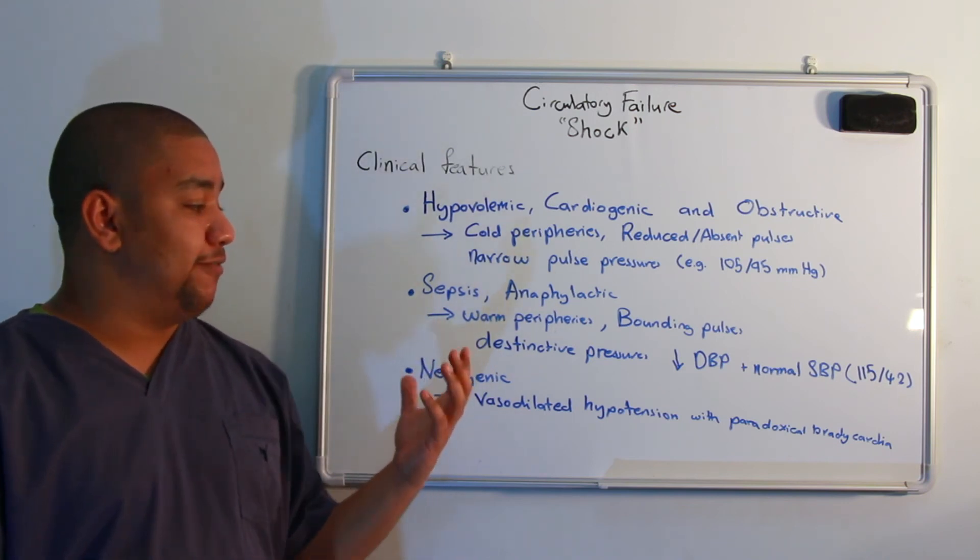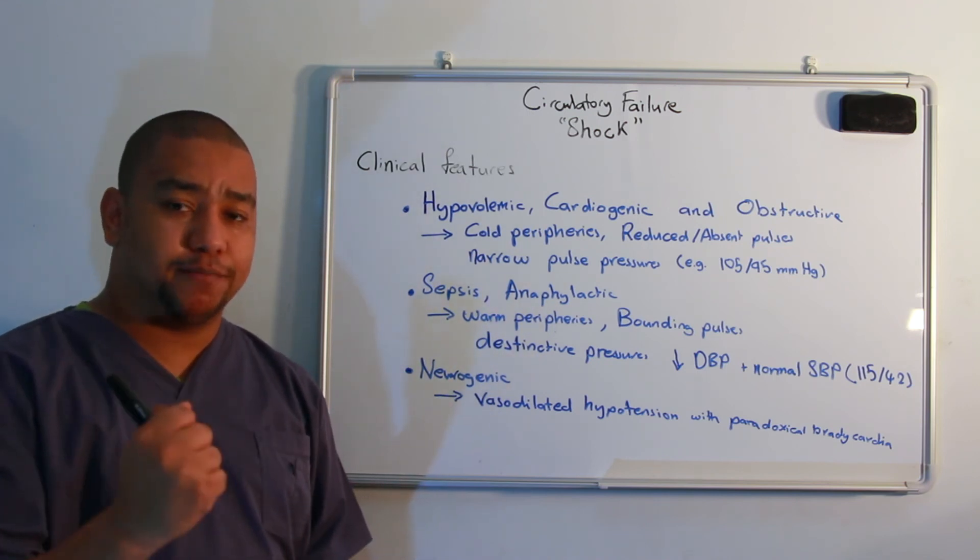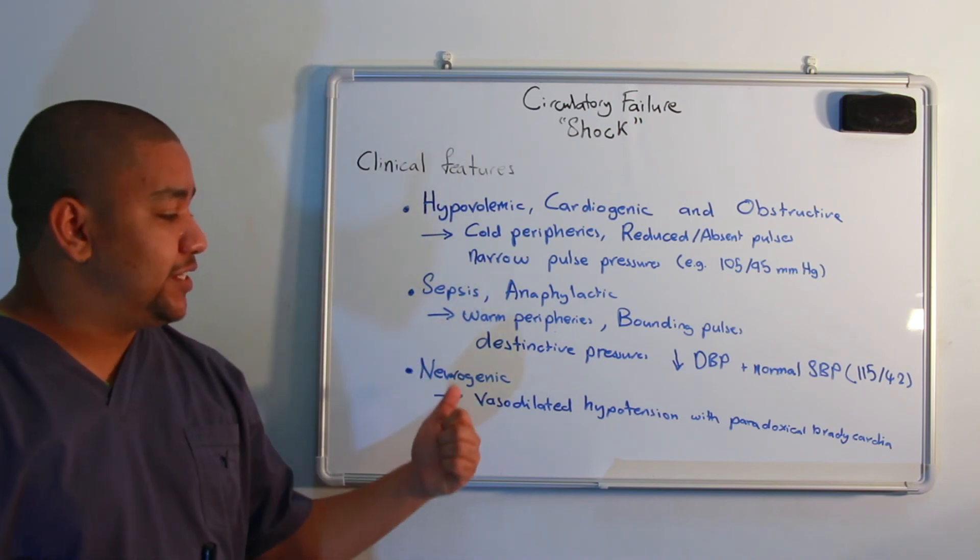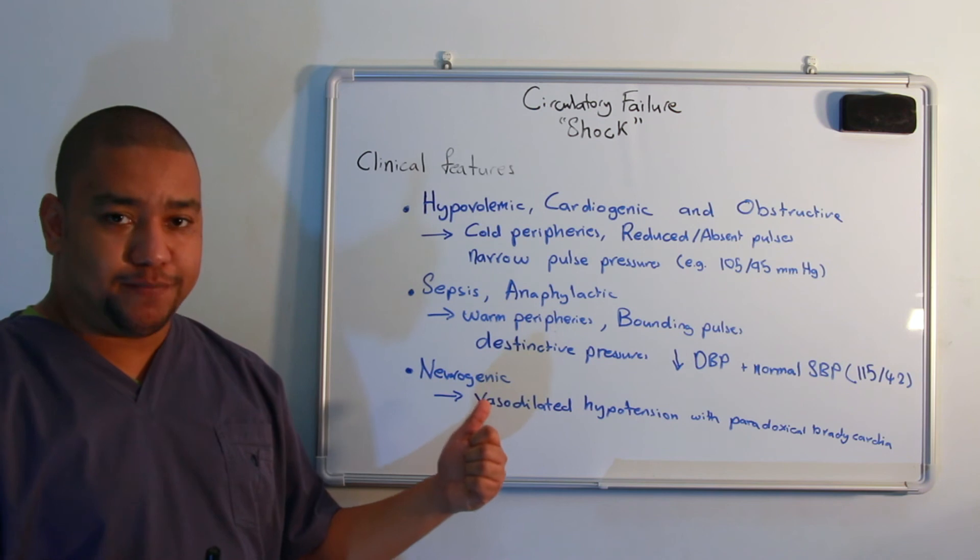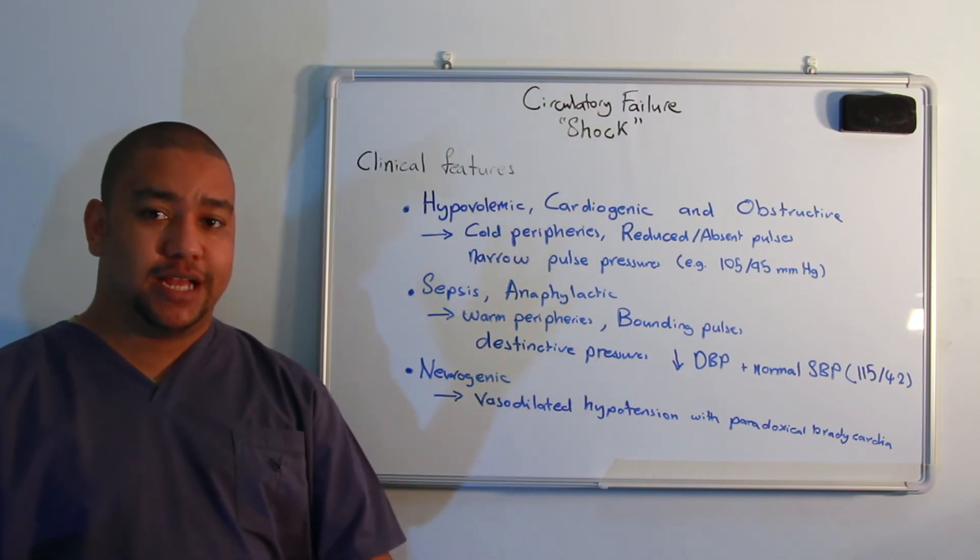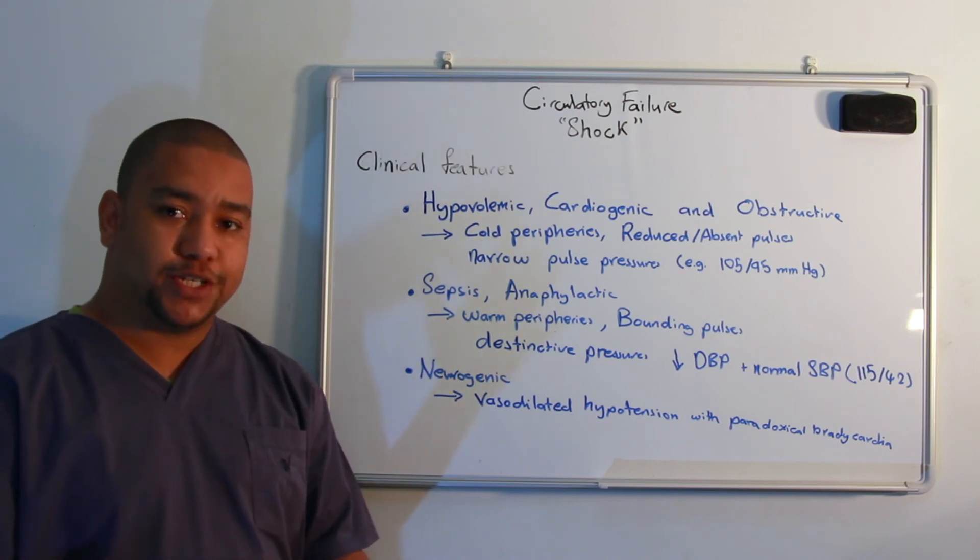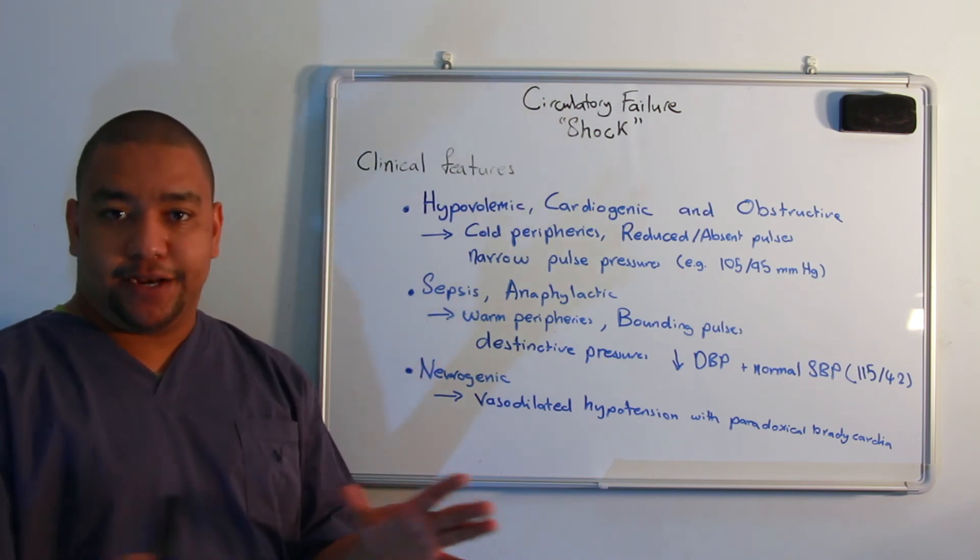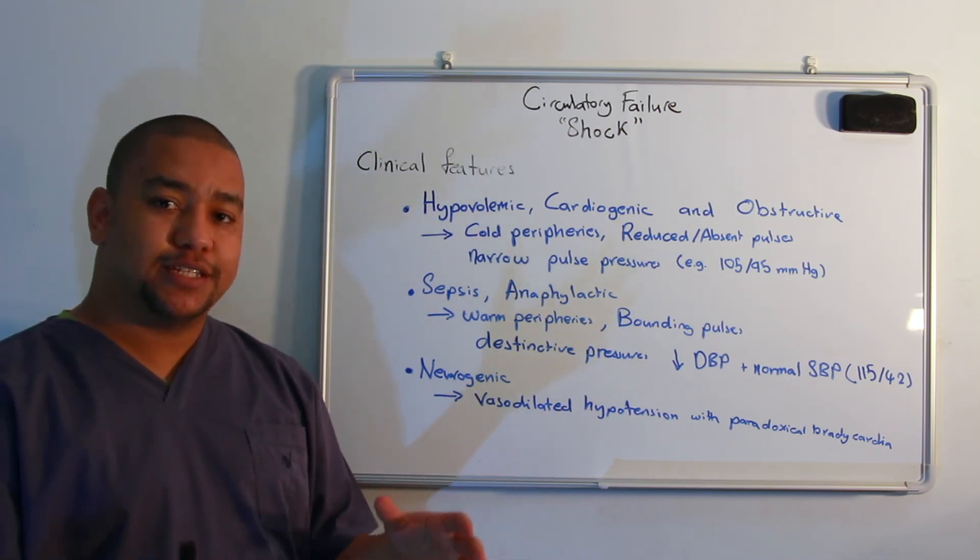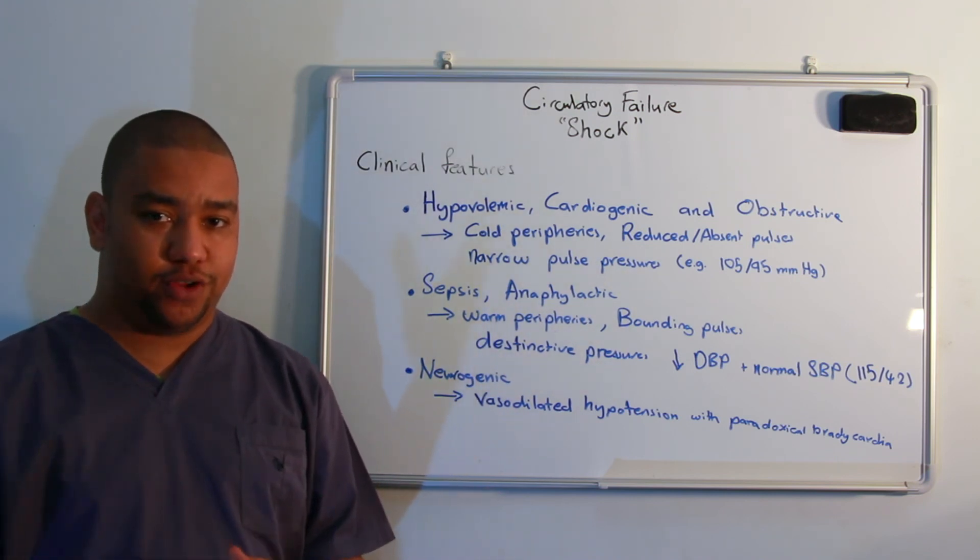In septic and anaphylactic shock, you would have warm peripheries and a bounding pulse. Here too, there would also be a distinctive pressure pattern early on in the disease. There would be a low diastolic pressure and a normal systolic blood pressure. A low diastolic blood pressure is due to the increased vasodilation, and the normal systolic blood pressure is a decrease in the afterload, therefore maintaining the stroke volume.